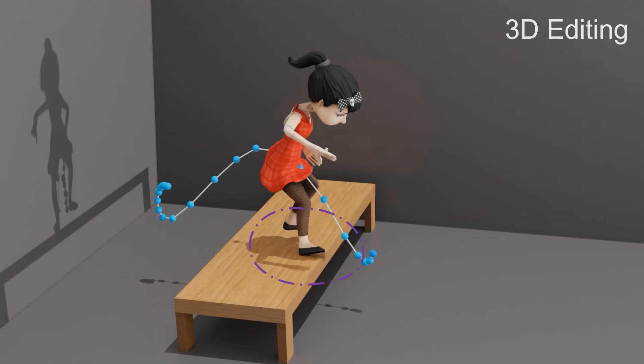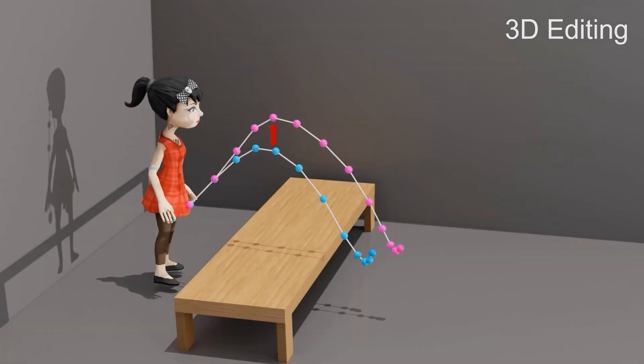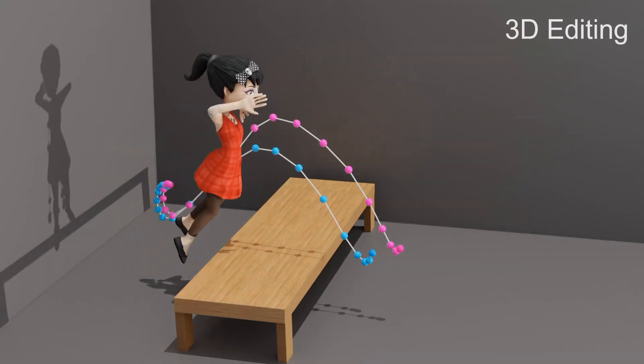As a byproduct, our framework inherently supports 3D motion editing. Suppose users are unsatisfied with the height of the jumping, since it might collide with the table. Users can simply drag and place a few 3D trajectory points in our interface, as shown by the purple points. Thanks to the technical design of our motion generator, without any modification, our 3D conditional motion generator can naturally take the updated trajectory points as new conditions, so as to update the resulting motion accordingly.